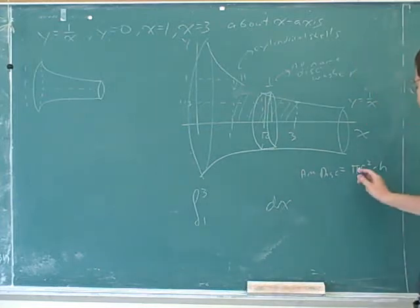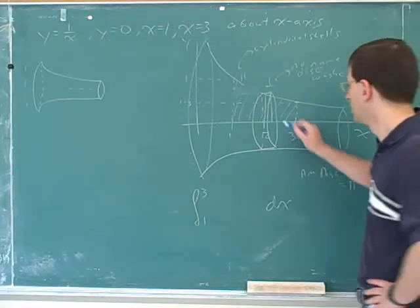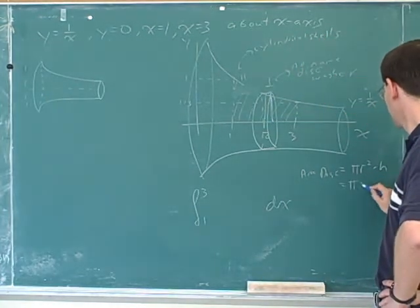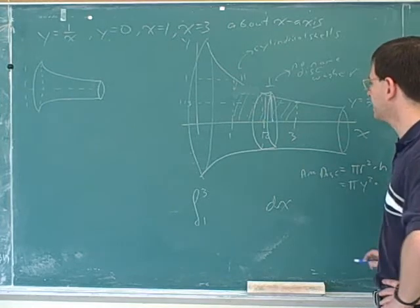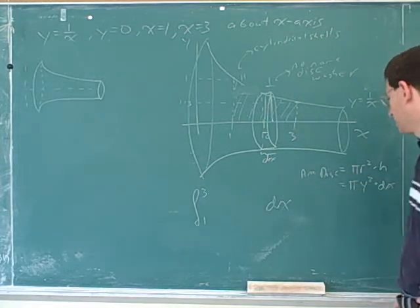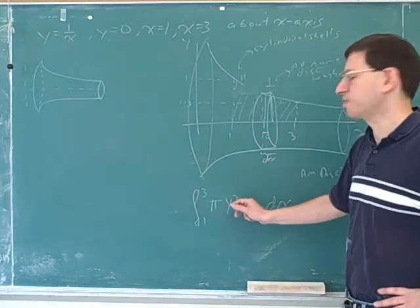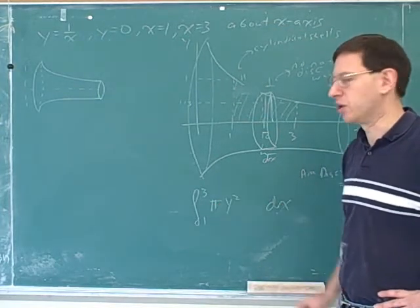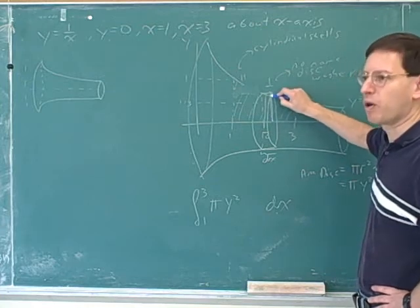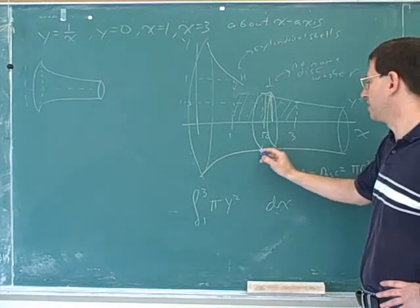The radius here is given by the function. The function is going to tell us the radius, so that would be pi times y squared. And the height is dx. dx is the height of this little cylinder, so what we actually put in here is pi times y squared times dx. So we don't put in y — we put in y squared, and we've got to put the pi in as well. So y is the radius? That's right. This distance here is the radius, and that's given by y.